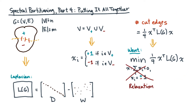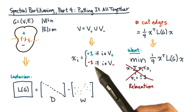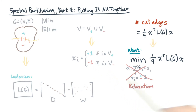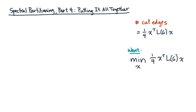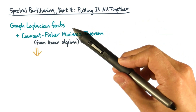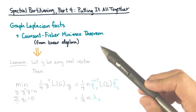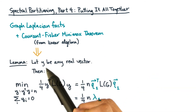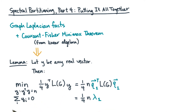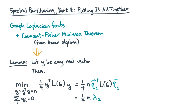Let's start by taking away the requirement that we assign exactly a plus one or a minus one to every vertex. If you do so, then there's a really neat fact we can use. This fact combines everything we know about graph Laplacians along with a cool theorem from linear algebra called the Courant-Fisher Minimax theorem. If we're allowed to use any vector y, where y is normalized in a certain way and its elements sum to zero, then the vector y that minimizes this quantity is actually q1. q1 is the eigenvector corresponding to the second smallest eigenvalue. And in fact, the minimum value simplifies to something that is proportional to that eigenvalue.